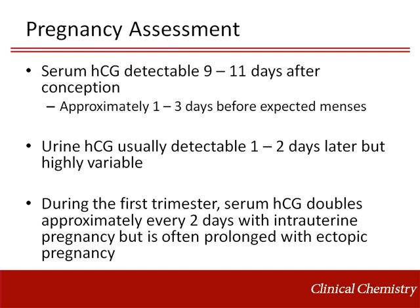On average, HCG becomes detectable in the serum approximately 9 to 11 days after conception, which corresponds to about 1 to 3 days before the day of the expected menses. HCG appears in the urine a short while later, but is highly variable. During the first trimester of pregnancy, the HCG concentration in the serum doubles every two days with an intrauterine pregnancy.